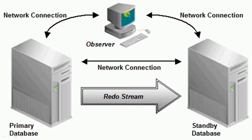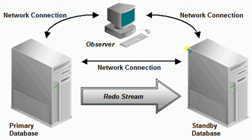When users try to make a connection and fetch data, they will connect to the new primary — the old standby — and they will not even know where the data is coming from. In switchover, we are mainly changing the role of the database. This is a planned activity, not an unplanned one. Whenever you want to perform any activity on the primary database server, you can change the roles so that users get data at all times. We call this high availability.